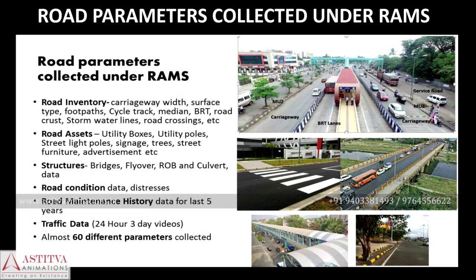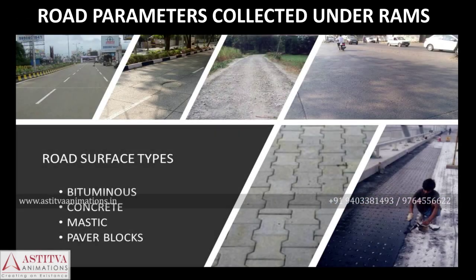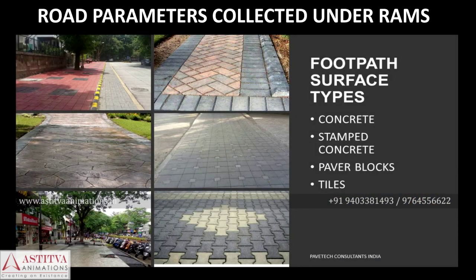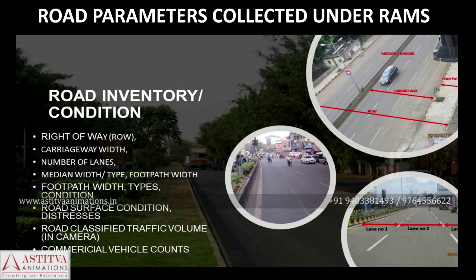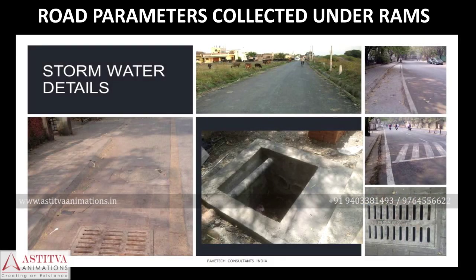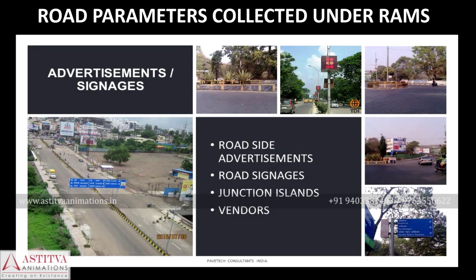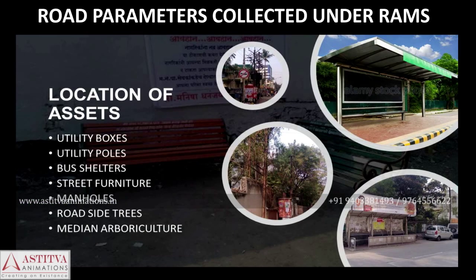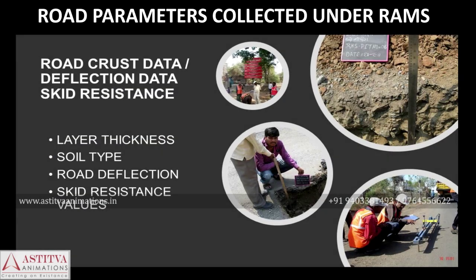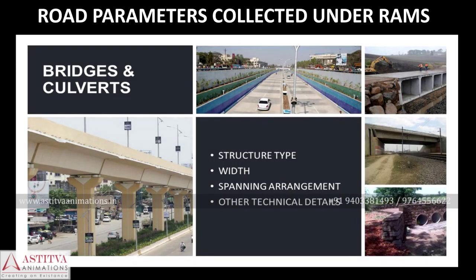Various road parameters collected under RAMS include road inventory such as carriageway width, surface type, footpaths, cycle track, median, BRT, road crust, stormwater lines, and road crossings. Road assets include utility boxes, utility poles, streetlight poles, signage, trees, street furniture, and advertisements. Data on bridges, flyovers, ROBs and culverts, road condition, road maintenance history, and traffic data for the last five years and 24-hour video counts for three days are also collected. Almost 60 different parameters are collected in total.